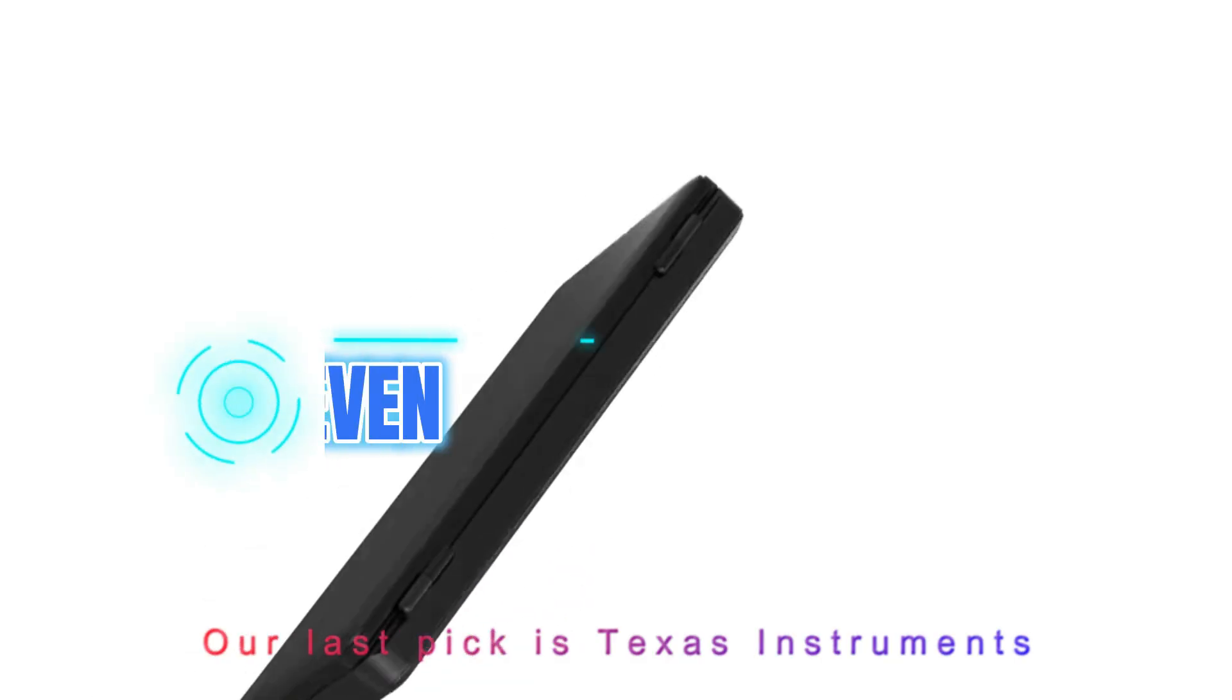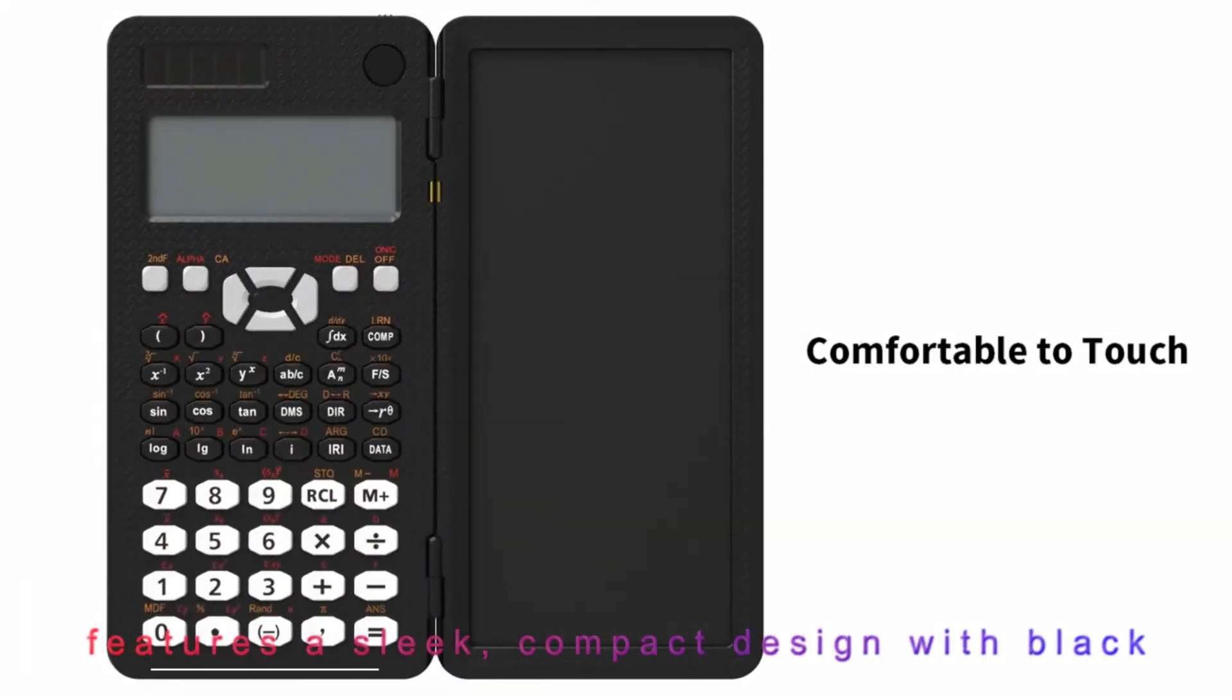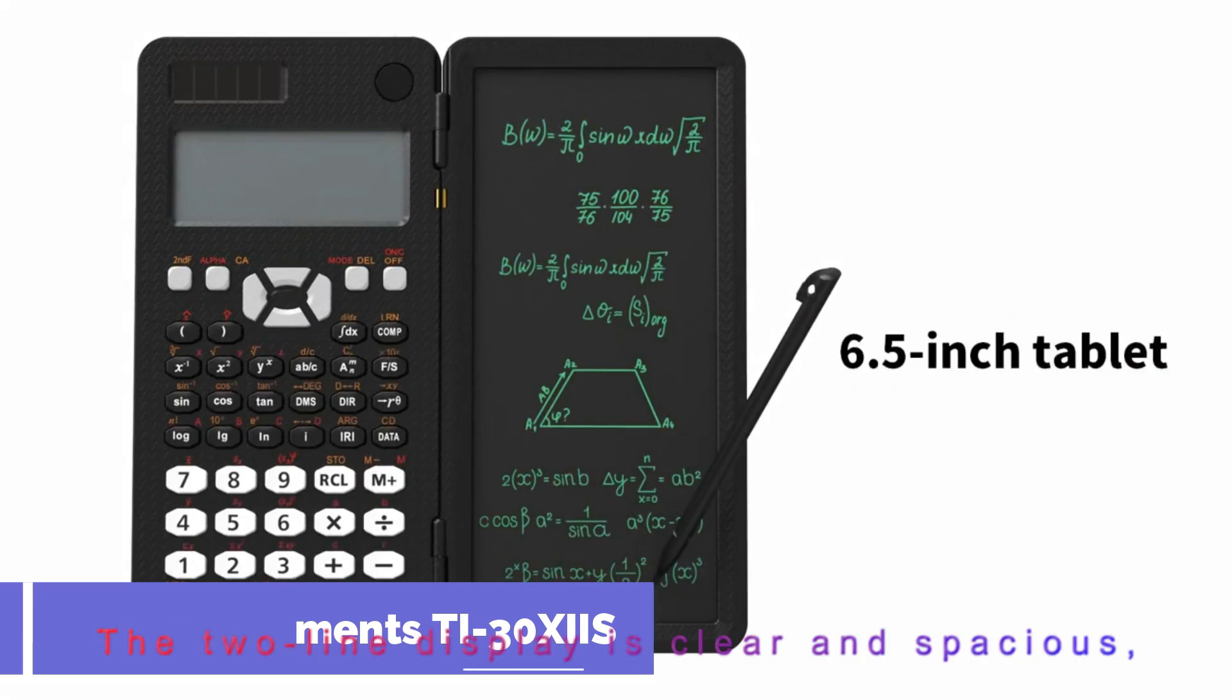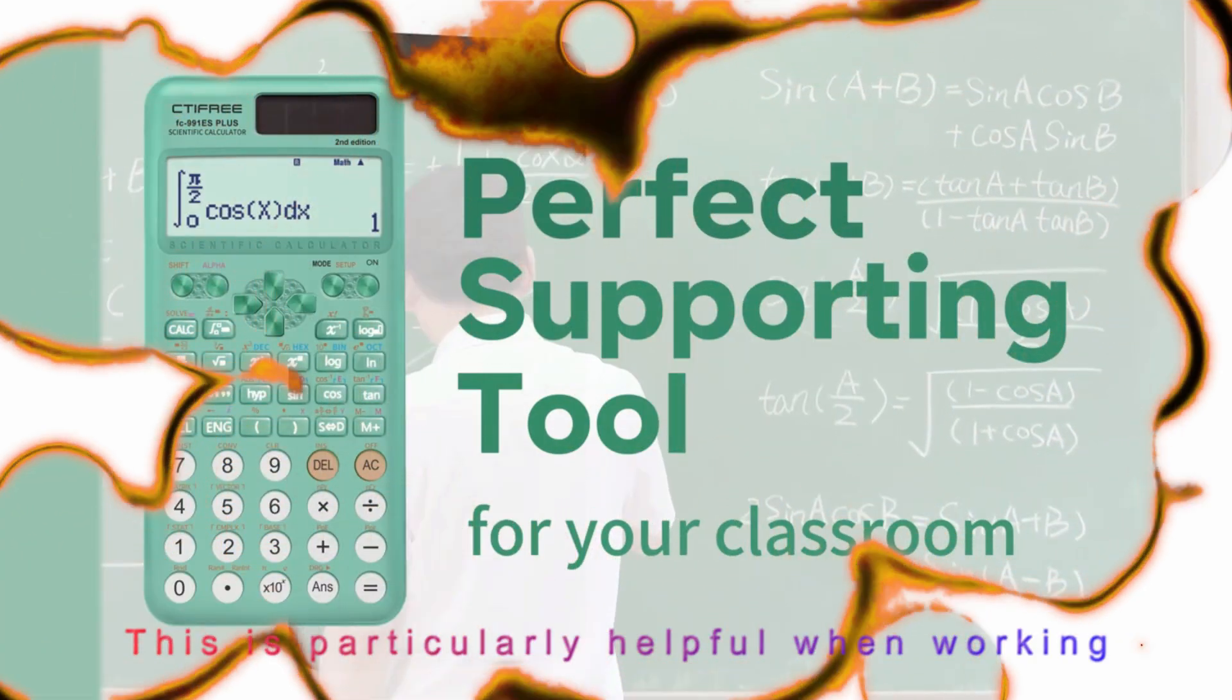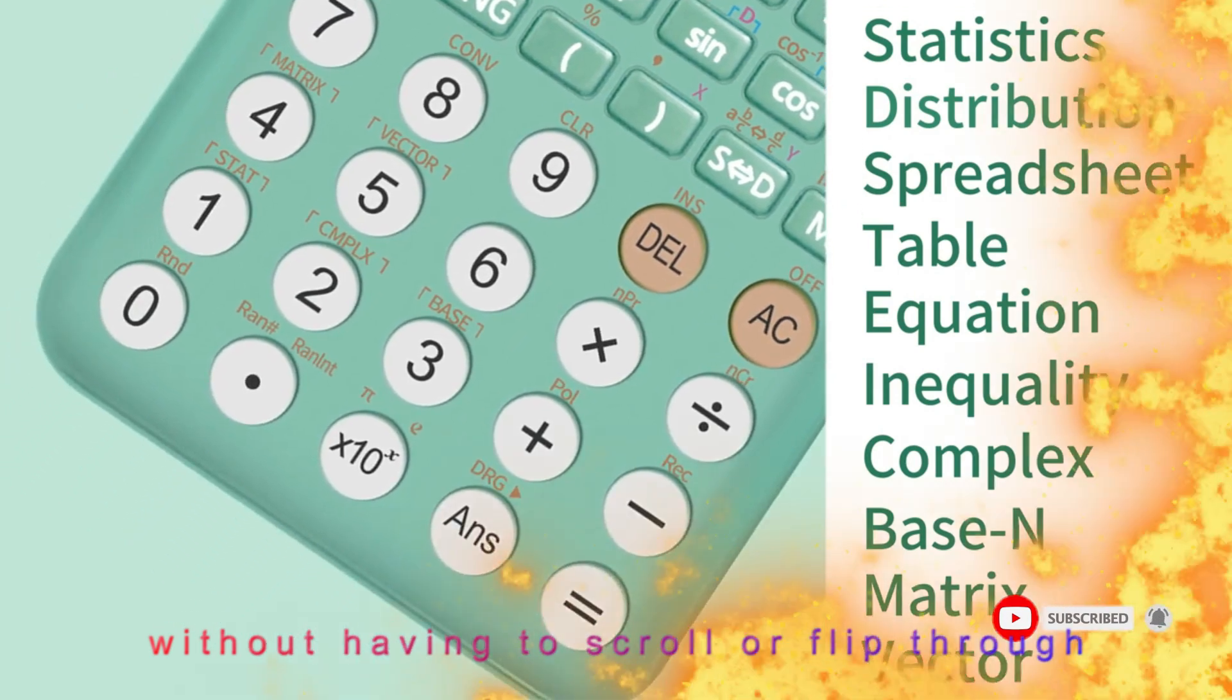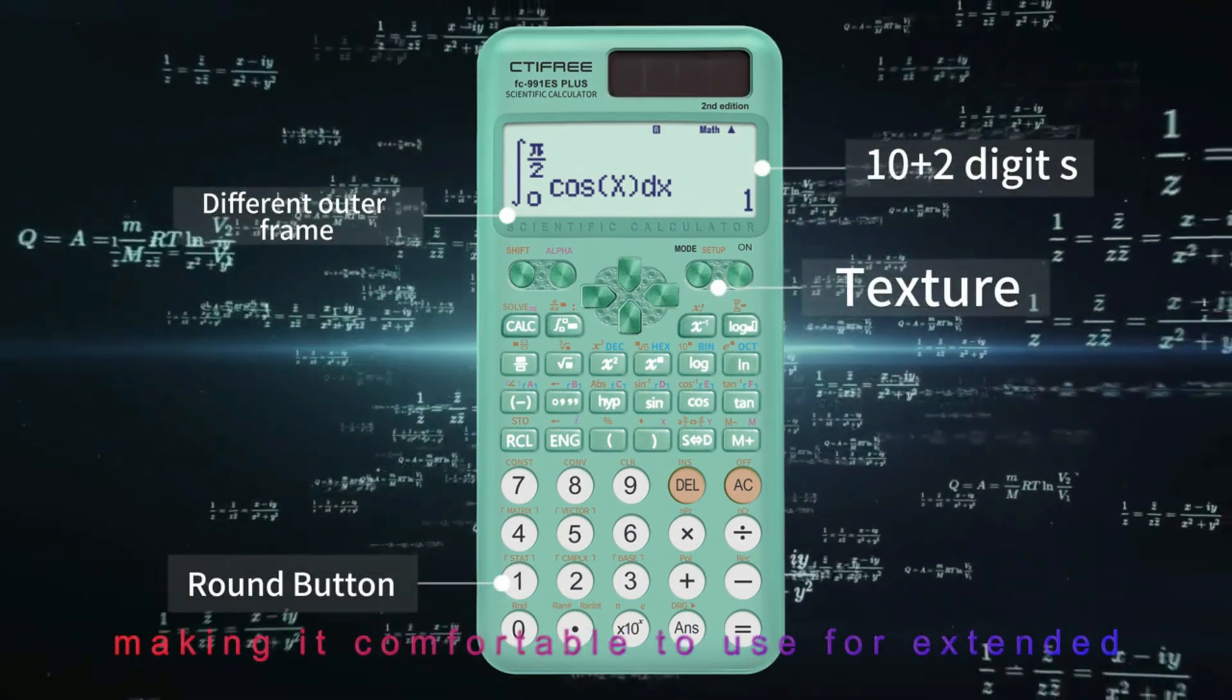Our last pick is Texas Instruments TI-30 XIIS Scientific Calculator. The TI-30 XIIS features a sleek, compact design with black and blue accents, making it visually appealing and easy to carry in a bag or backpack. The two-line display is clear and spacious, allowing you to view equations and results simultaneously. This is particularly helpful when working on multi-step problems, as you can easily see both the input and the output, without having to scroll or flip through different screens. The buttons are well-spaced and provide a satisfying tactile response, making it comfortable to use for extended periods.